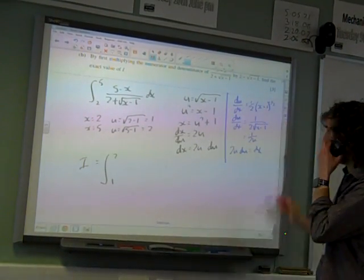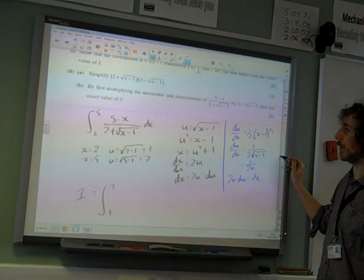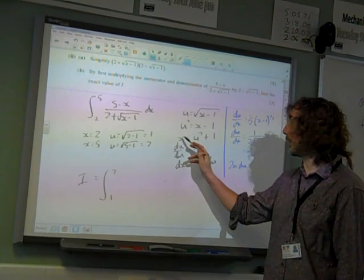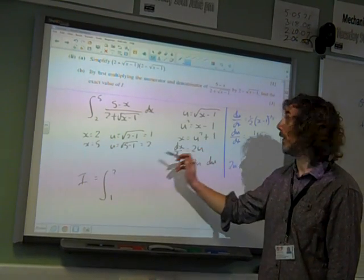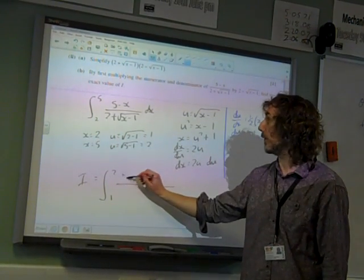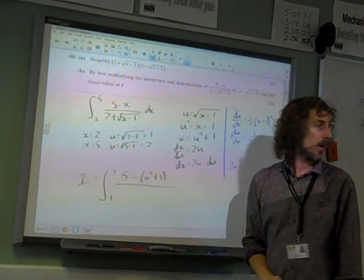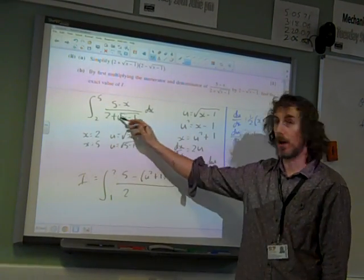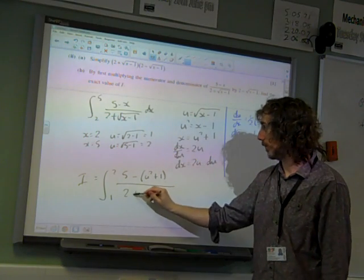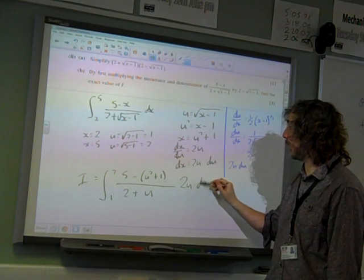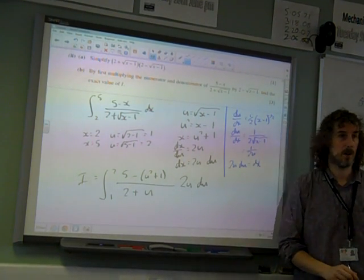Right. So now let's do some switching round of things. 5 minus x... Well hang on, what have we got here? x is u squared plus 1. So that top line is 5 minus u squared plus 1. So the bottom line is 2 plus u. And then we're replacing dx with 2u du.